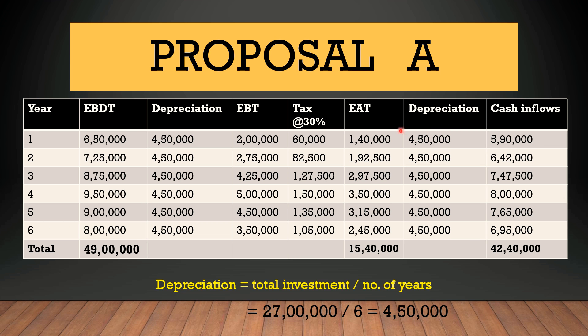When you add depreciation back to EAT, you get the actual cash inflows. For example: 1 lakh 40,000 plus 4 lakh 50,000 is 5 lakh 90,000; and 3 lakh 50,000 plus 4 lakh 50,000 becomes 8 lakh rupees. These are your net cash inflows — the actual cash inflows we will use for calculating the various capital budgeting techniques.